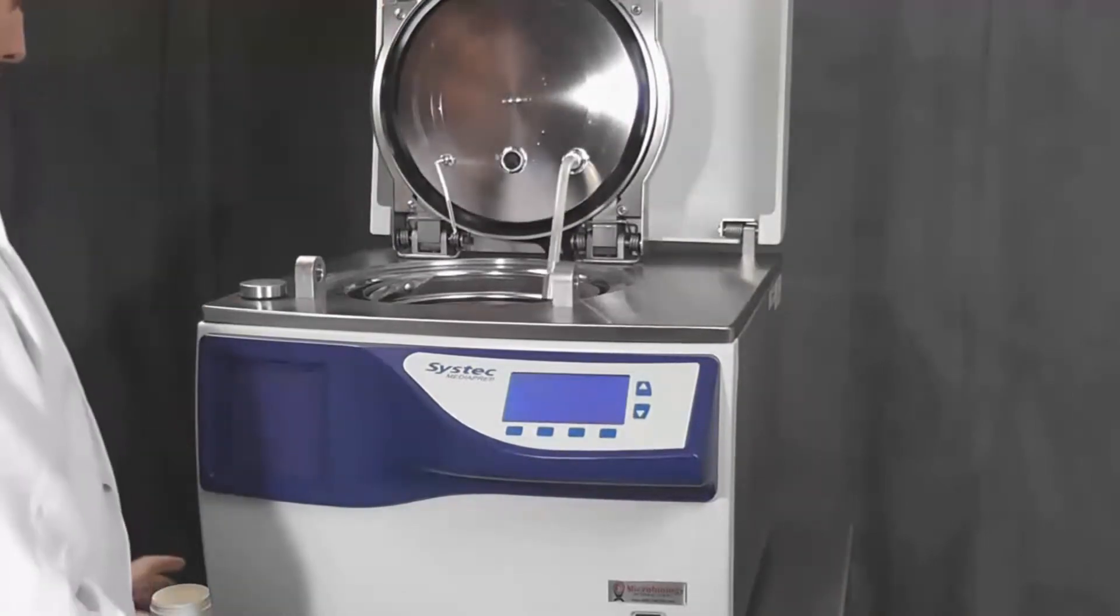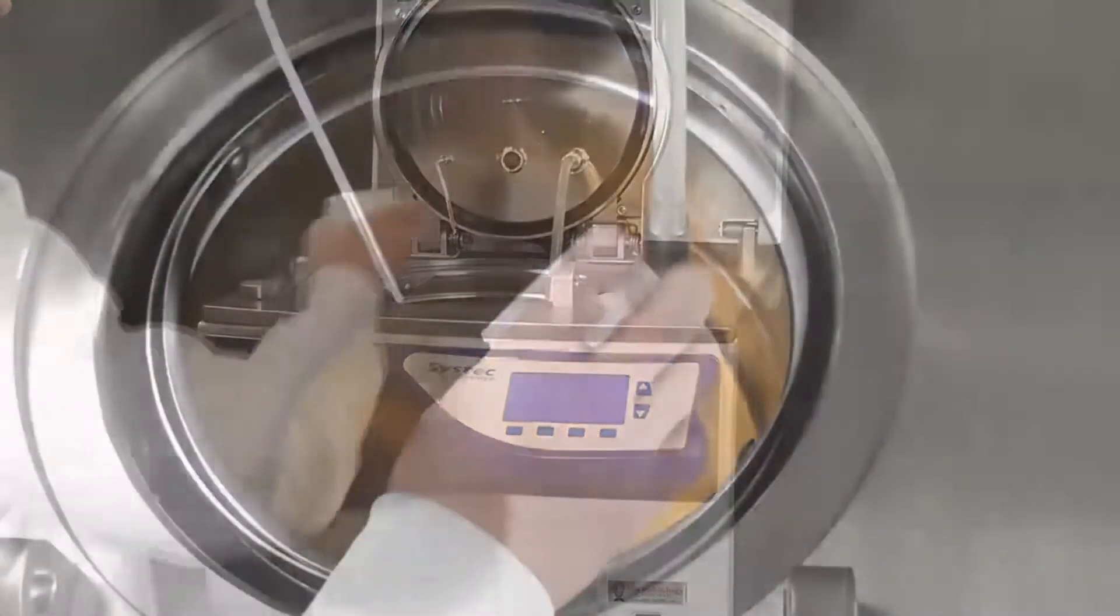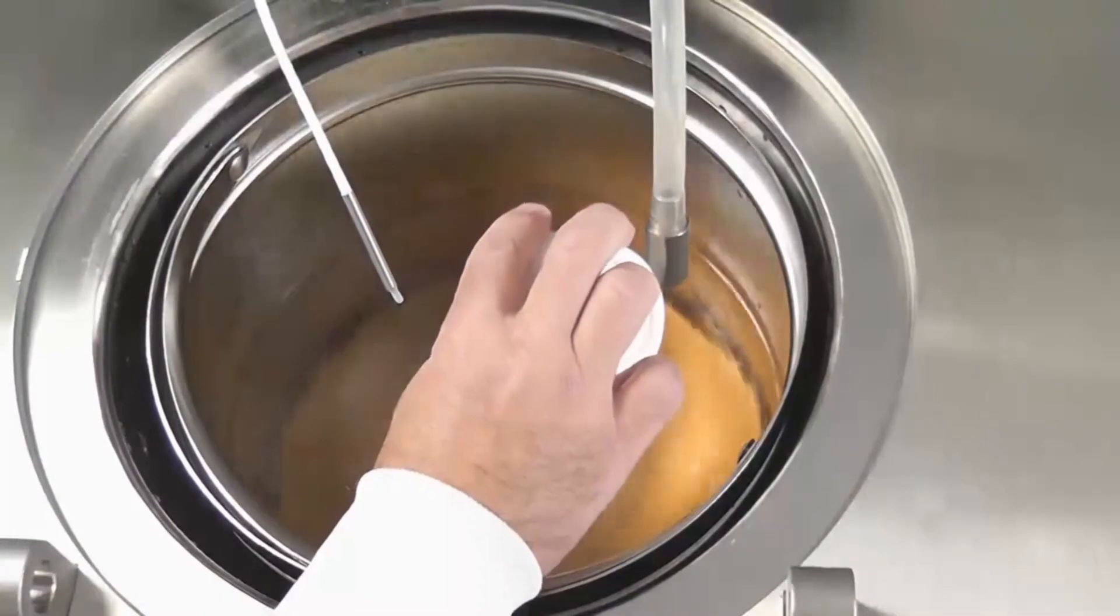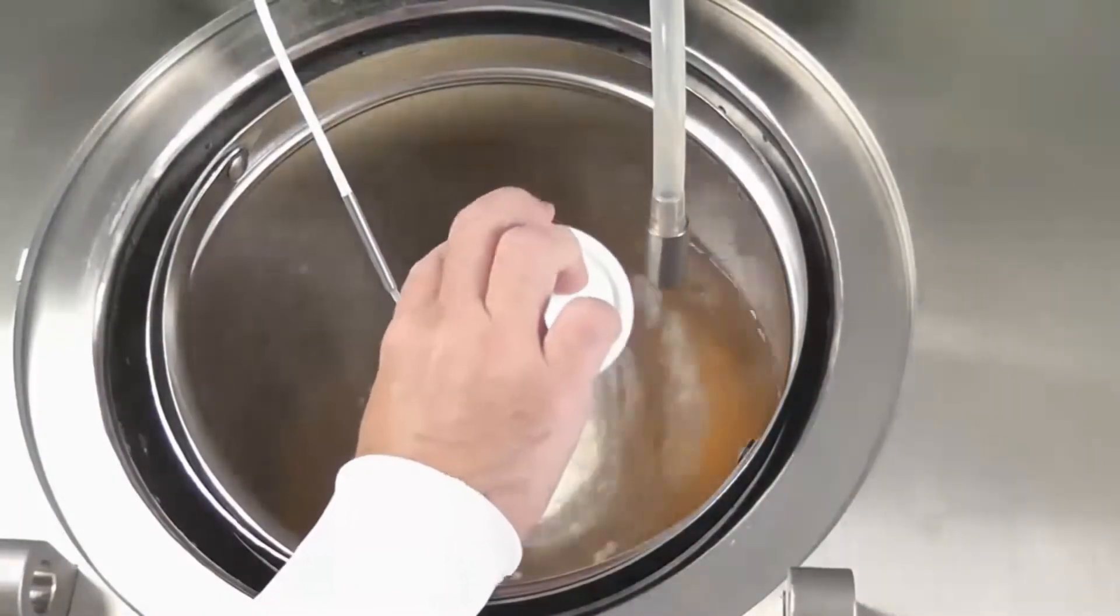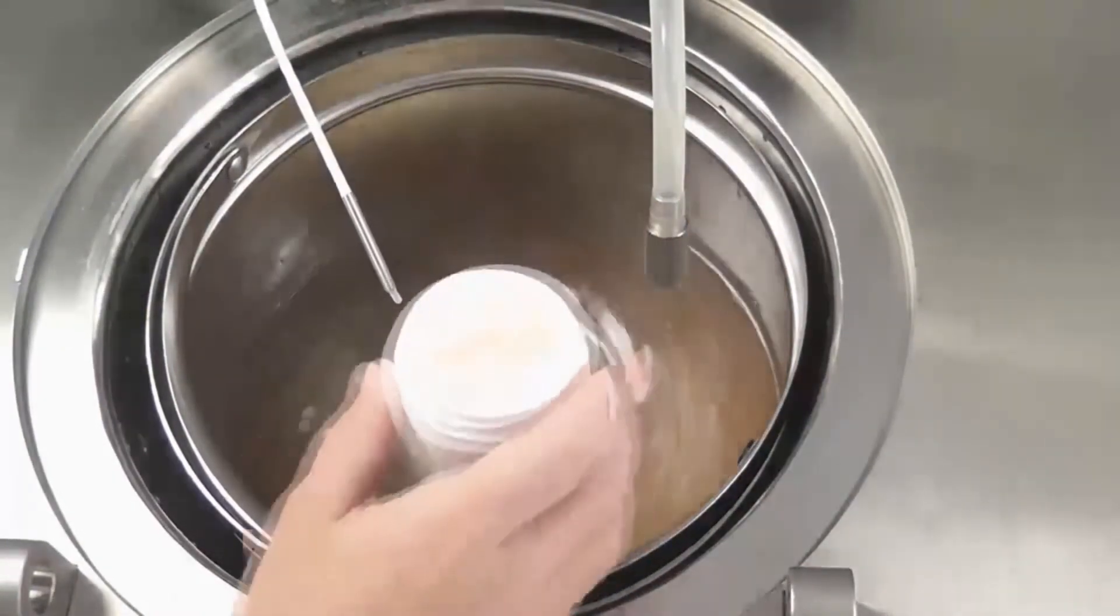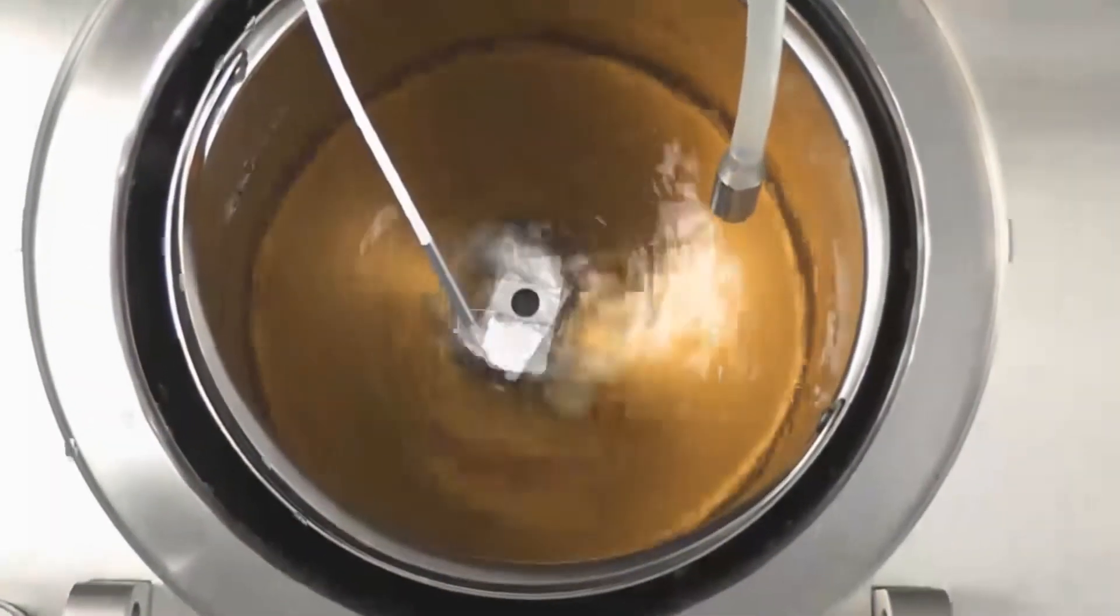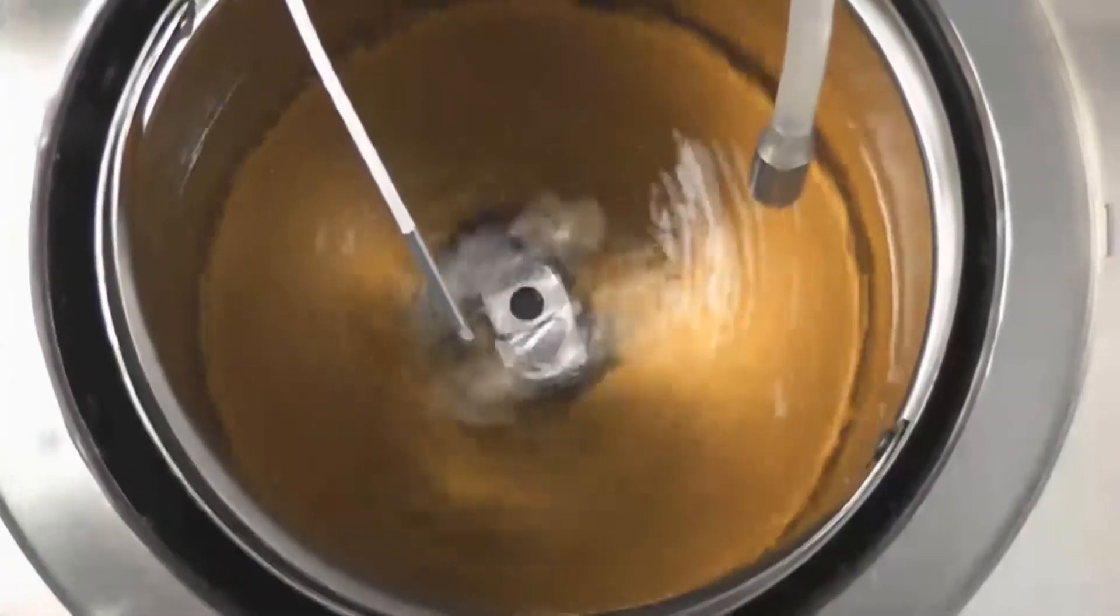After adding the appropriate volume of water in the sterilization vessel, dispense your dehydrated culture media. A magnetic stir bar ensures homogeneous mixing of your media throughout the entire sterilization, cooling, and pouring phases of the cycle.